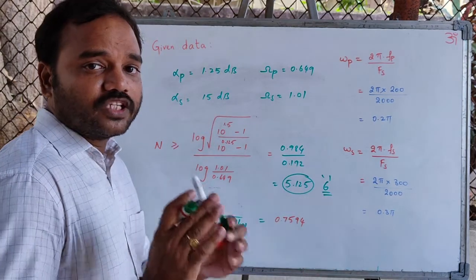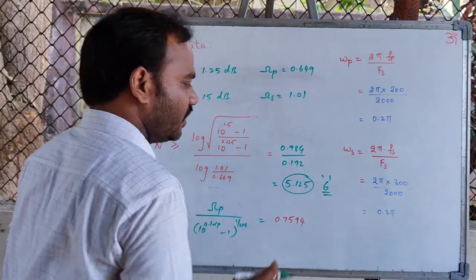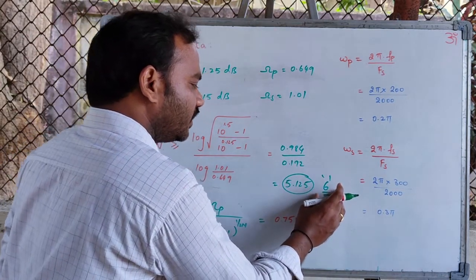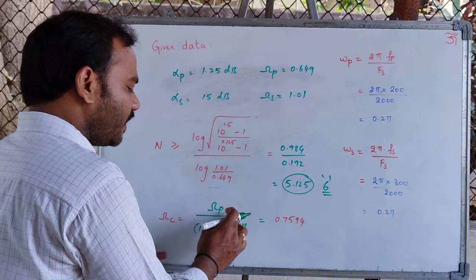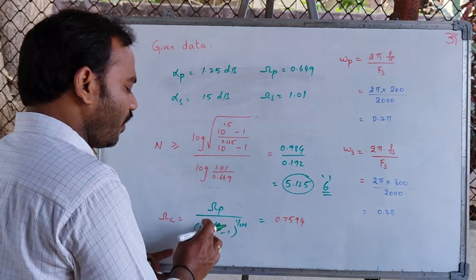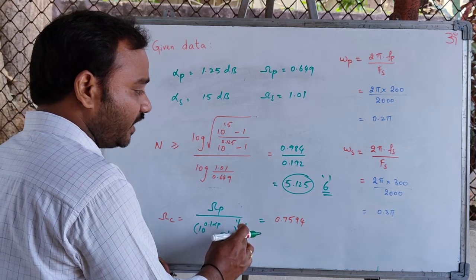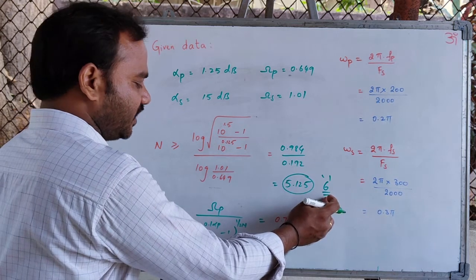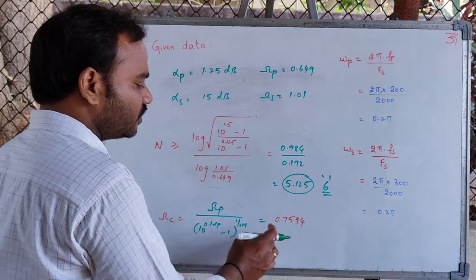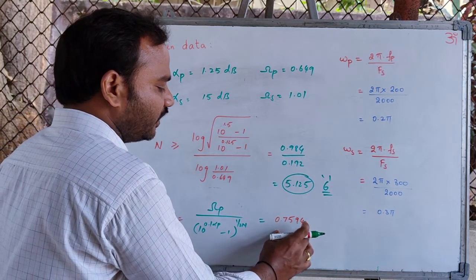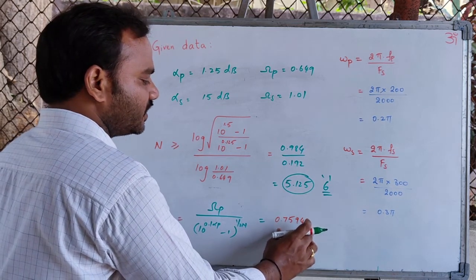For the given specifications, the order of the low-pass filter required is 6. We now use this order to compute the cutoff frequency. The cutoff frequency equals the passband frequency divided by (10^(0.1 × αp) − 1)^(1/(2N)), where N = 6 and the passband attenuation αp = 1.25dB. Substituting all values, the cutoff frequency Ωc is computed to be 0.7594 rad/s.